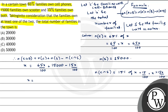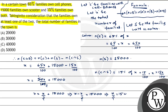So X equals 65X by 100 minus 15X by 100, which gives 50X by 100, plus 15,000. This simplifies to X equals X by 2 plus 15,000. Therefore X minus X by 2 equals 15,000, so X by 2 equals 15,000, and cross-multiplying gives X equals 30,000. The total number of families in the town is 30,000. So option B, 30,000, is the correct answer.